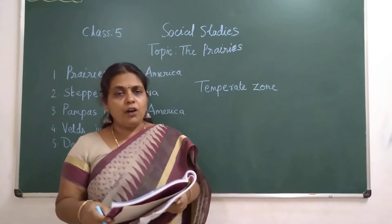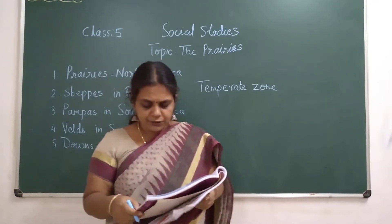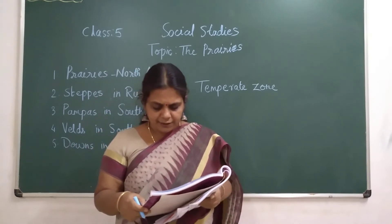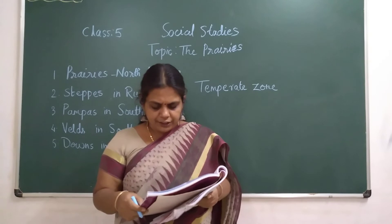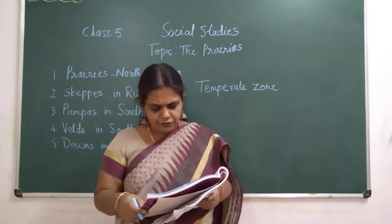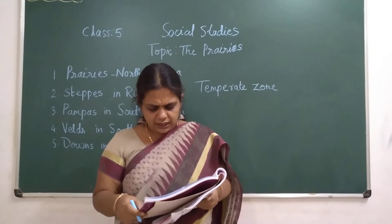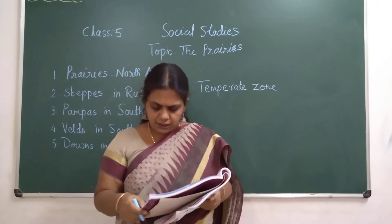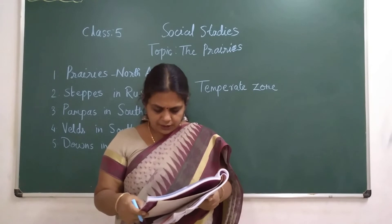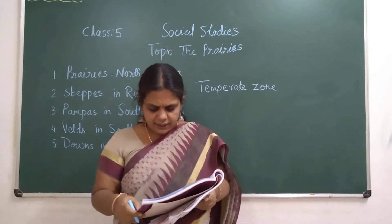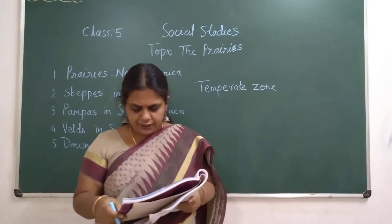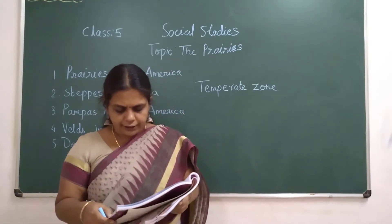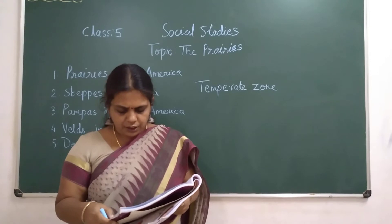Moderate rainfall of 50 to 70 centimeters, with a variation from year to year, occurs in this region during summers. This type of climate is called a continental climate.